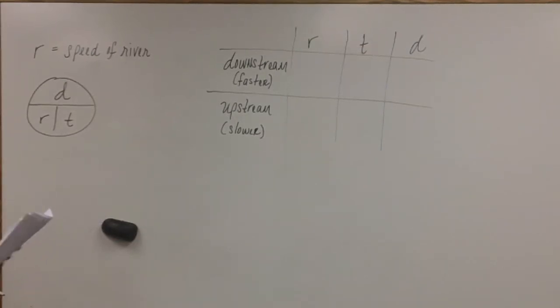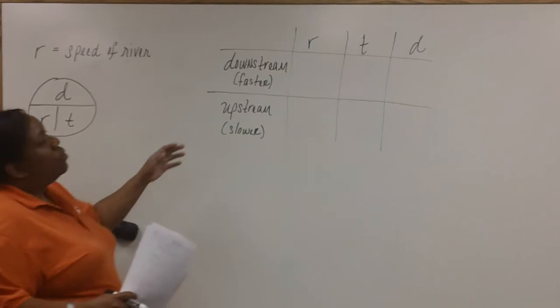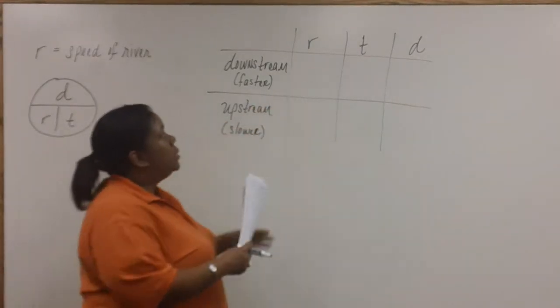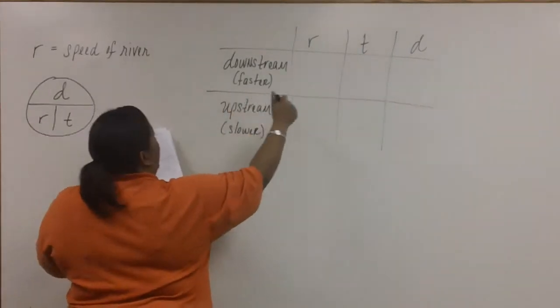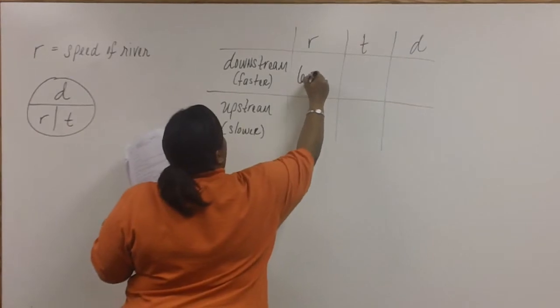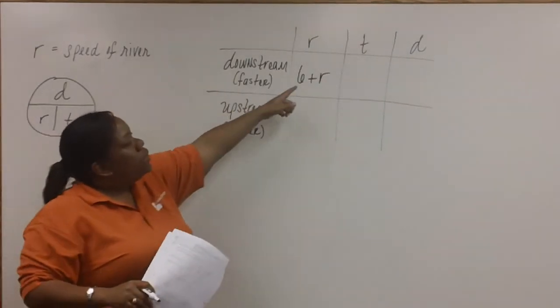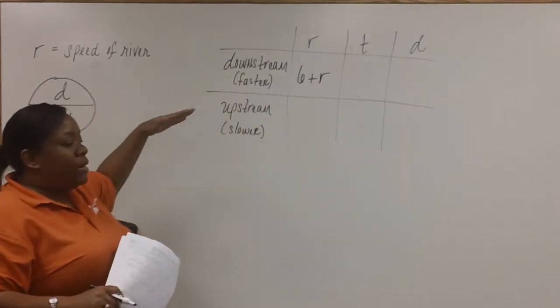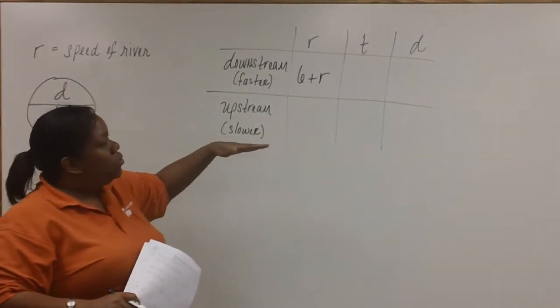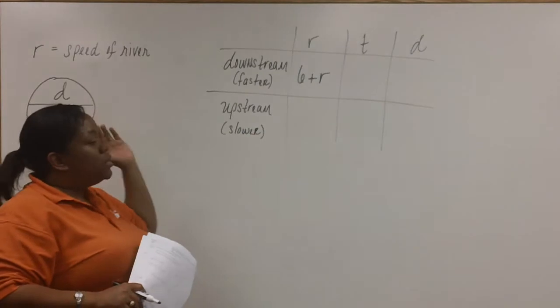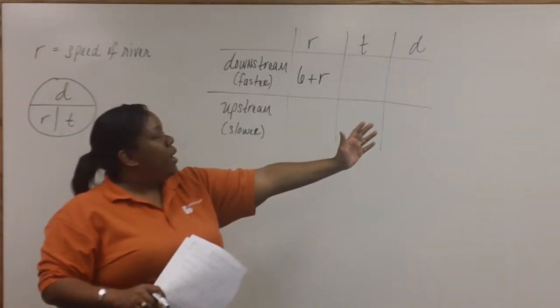In problem number eight, we're told that a paddle boat can move at a speed of six kilometers per hour. So, here for the rate, we're going to write six plus r for downstream. The reason we're using plus is because if you're going downstream, if the boat is going downstream, the current is pushing it along, so it's moving faster.